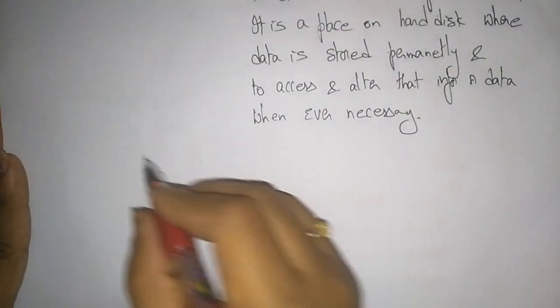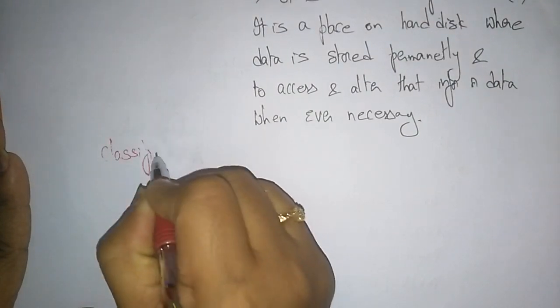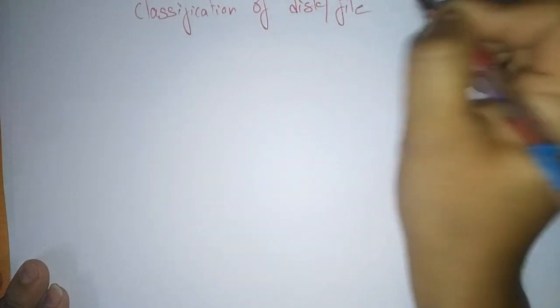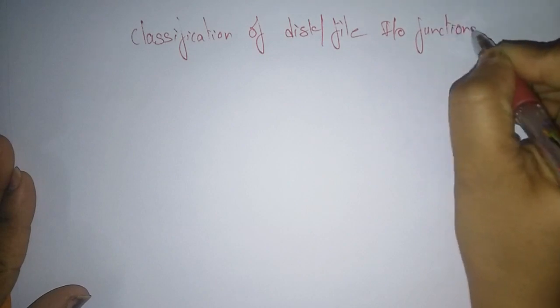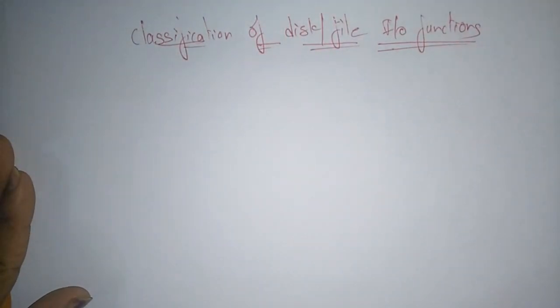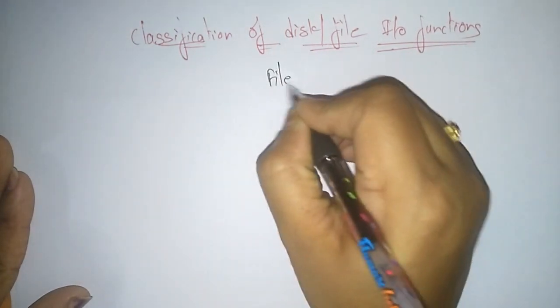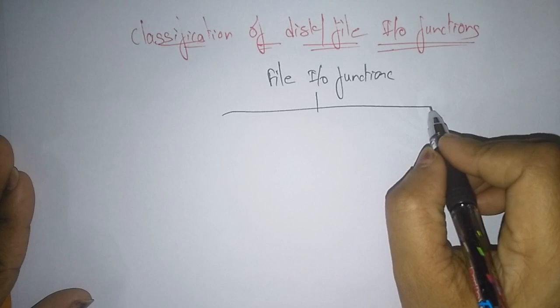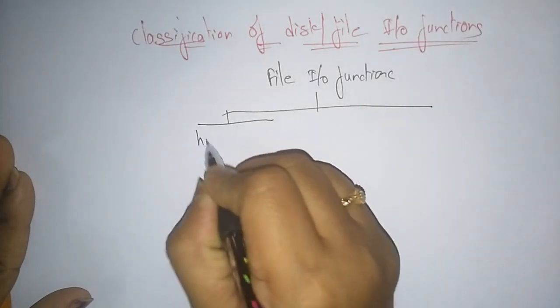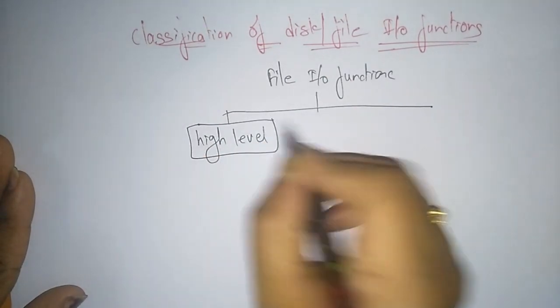File I/O functions classification. Let me take a fresh paper so that it will be easy for you to understand. Classification of disk or file I/O functions. The different file I/O functions — that is input/output functions — is divided into high level and low level.